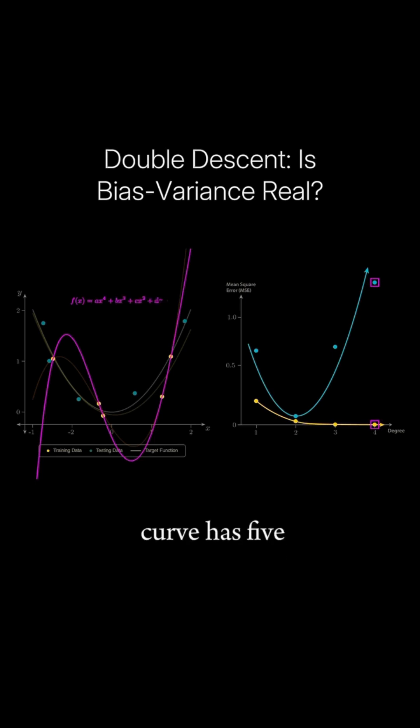Our fourth order curve has five free parameters that are able to exactly fit our five data points. This point is known as the interpolation threshold and corresponds to the smallest model that is capable of perfectly fitting our data.